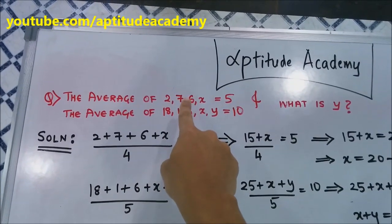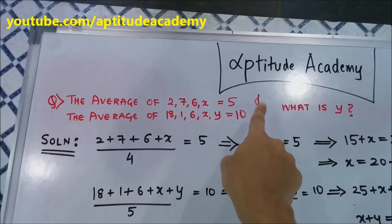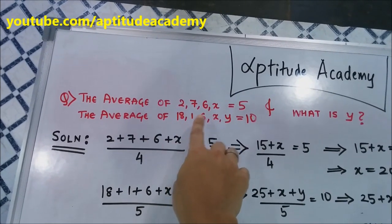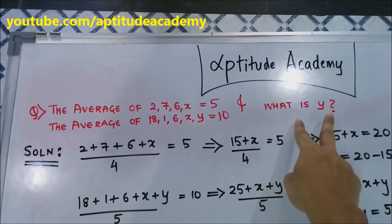the average of 2, 7, 6, and x is equal to 5. And the average of 18, 1, 6, x, and y is equal to 10. What is y?